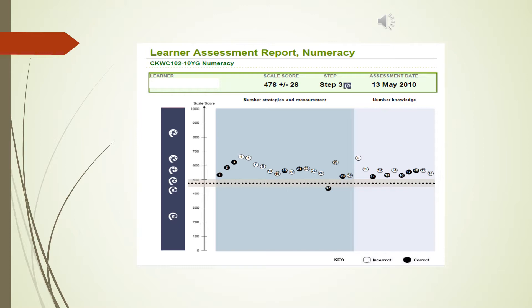This student, having done all the questions, is then summarised as being overall a step 3 student, and this is recorded in the bar at the top of the summary sheet. There is a lot more information available on the system about each individual question, but the main thing is to try to get an overall understanding of the level of numeracy skills that an individual learner currently has.